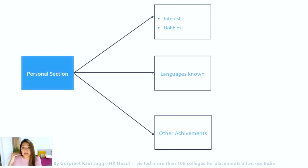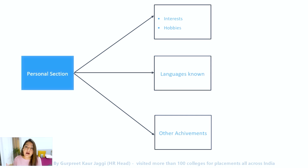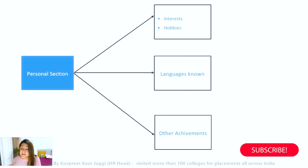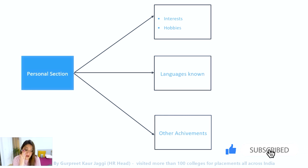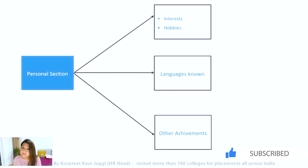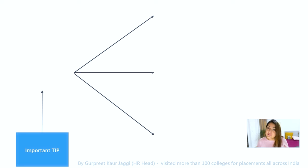In the personal section, you can mention your interests, hobbies, languages you know such as English, Hindi, or Marathi, extracurricular activities, initiatives you've taken, and awards you've received. This is an extra section — your CV won't get rejected for not having it, but it's a nice addition. As a fresher, your CV should not exceed one to two pages maximum. Keep all the details but stay concise.